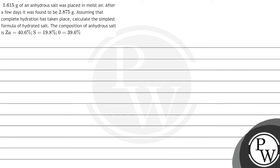Hello Bacho, let's read this question. The question says: 1.615 gram of an anhydrous salt was placed in moist air. After a few days, it was found to be 2.875 gram. Assuming that complete hydration has taken place, calculate the simplest formula of the hydrated salt. The composition of the anhydrous salt is: zinc = 40.6%, sulfur = 19.8%, and oxygen = 39.6%.